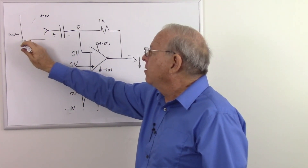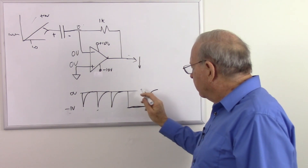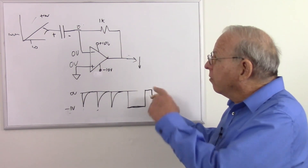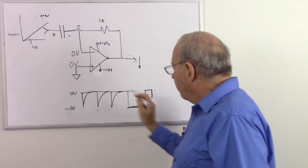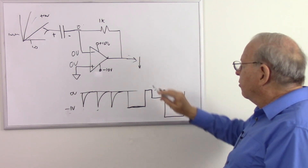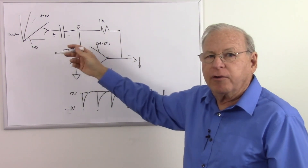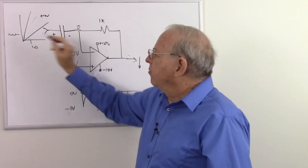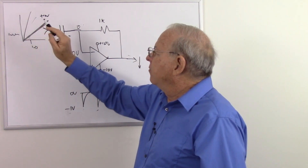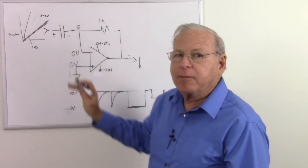If the input changes at a lower rate — fewer volts per second — we get a lower output voltage. If it changes at a higher rate, we get a higher output voltage, but notice it's going negative rather than positive. So if we want a positive output from a positive input, we'd need to add an inverter. The differentiator takes a voltage changing linearly over time — a straight ramp — and turns it into a steady DC voltage, where the output tells us the slope of the input.